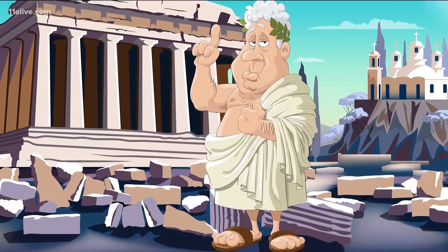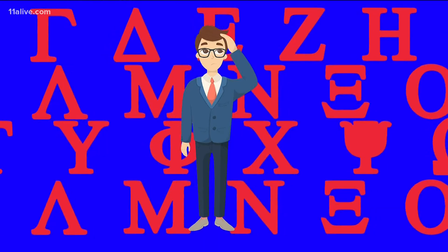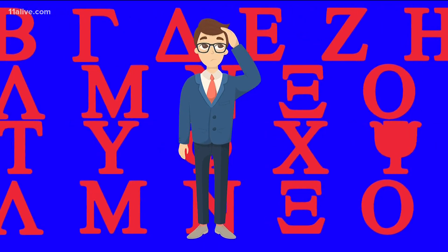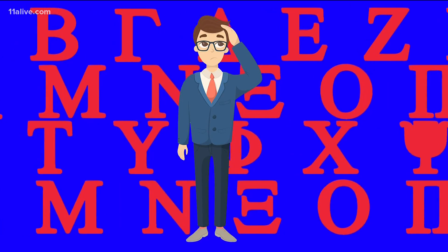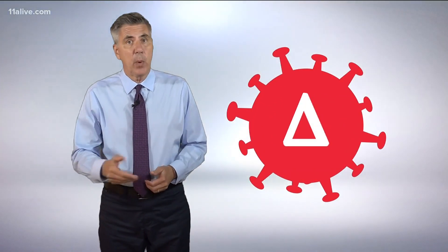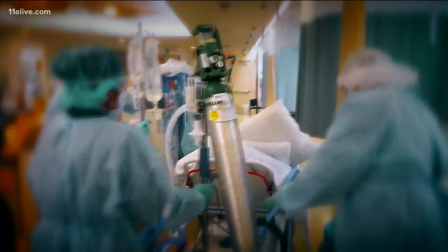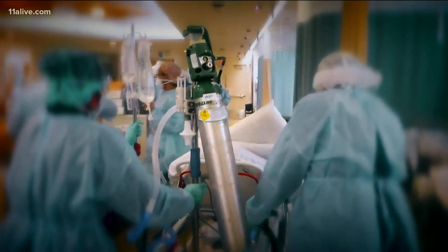It's all Greek to me. That's a term often used when we encounter a subject we don't fully understand. The World Health Organization is using the Greek alphabet to help us keep up with and perhaps better understand the ever-changing coronavirus.